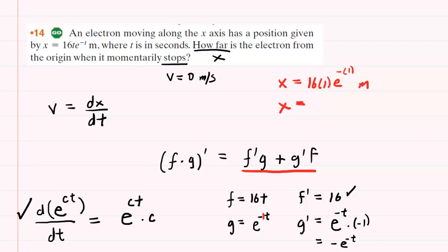We would pick up our calculator and compute this value. So 16 times 1 times e raised to the negative one turns out to be about 5.89 meters. So this will be the correct answer to the question.